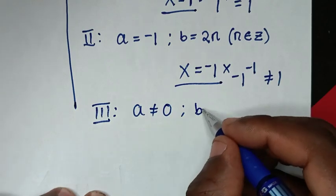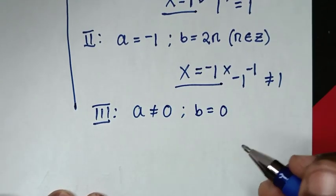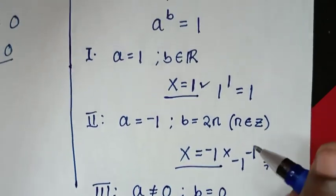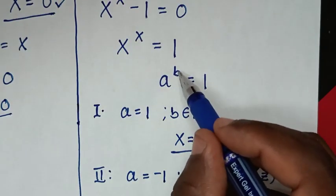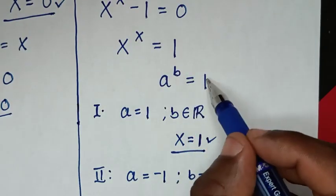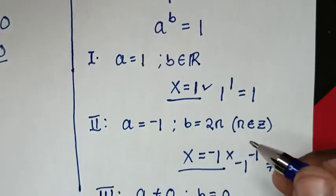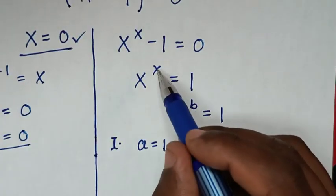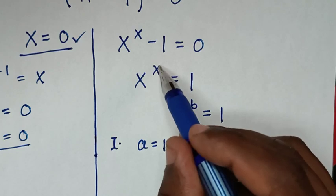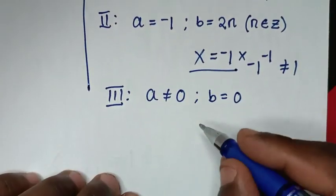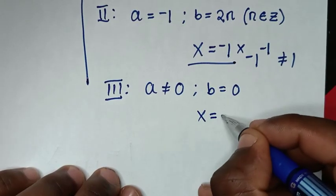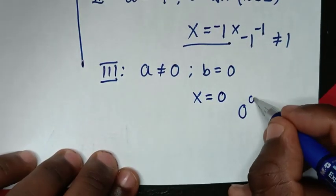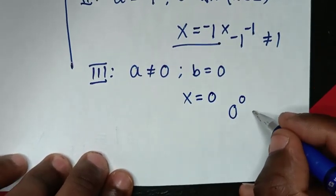For the third case, b equals 0, because any number except 0 raised to the power of 0 is 1. So if b, which is x, equals 0, then a, which is x power of x, becomes 0 power of 0. Checking x equals 0 gives 0 power of 0, which is undefined.